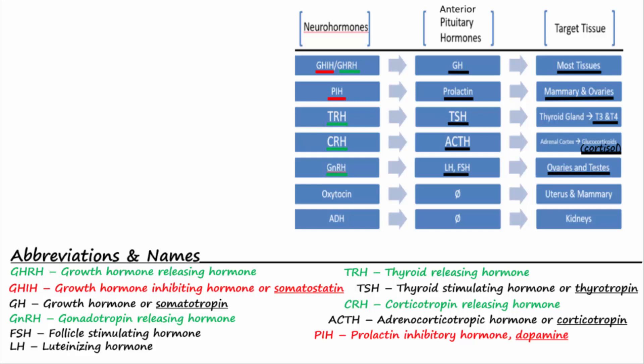Two hormones — oxytocin and antidiuretic hormone, ADH, also known as vasopressin — are produced in the hypothalamus and released into general circulation from axons of the posterior pituitary. Oxytocin travels to the mammary glands to stimulate release of milk and to the uterus to cause uterine contractions. ADH also enters the blood from the posterior pituitary and acts on the kidneys to retain water and on the blood vessels to cause vasoconstriction.